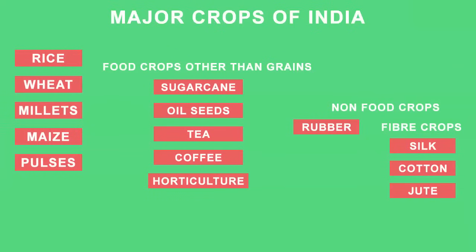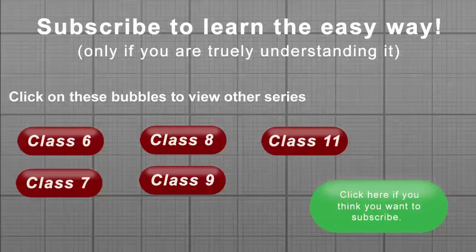That brings us to the end of all types of major crops produced in India. I hope you found this video informative. If you enjoyed this video and see a purpose behind watching it, please like the video and comment down below.